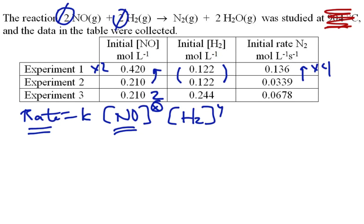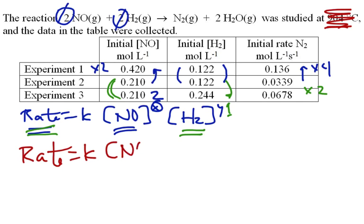To figure out Y, we find experiments where [NO] is not changing but [H₂] is doubling. We can see pretty easily that the rate has also doubled: 0.0339 goes into 0.0678 two times. So if I double the concentration of hydrogen, the rate doubles, meaning Y must be 1 — first order with respect to H₂. Rewriting the rate law: rate equals K times [NO]² times [H₂]¹. The reaction is second order for NO, first order for H₂, and third order overall.